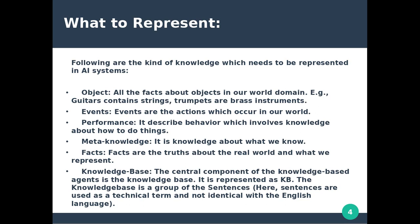The next type is performance knowledge — how to do things. This is what we know and understand about how to do things, and it represents information about real world tasks and actions.